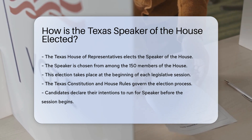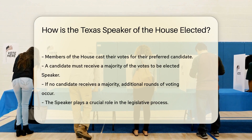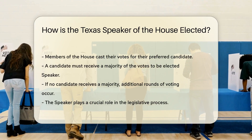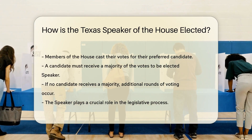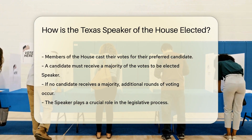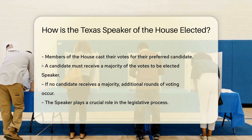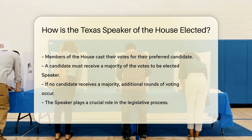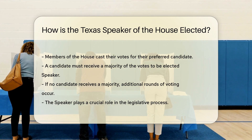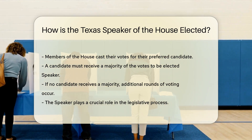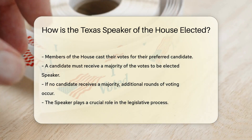Before the session begins, candidates declare their intentions to run for Speaker. Members of the House then cast their votes for their preferred candidate. A candidate must receive a majority of the votes to be elected Speaker. If no candidate receives a majority, additional rounds of voting occur.